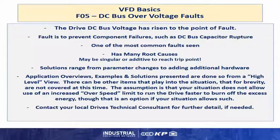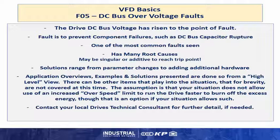The F05 throws when the DC bus has risen to a point to cause a fault. The fault is to prevent component failures such as DC bus capacitors and other items on the power section. It is one of the most common faults seen on AC drives and it has many root causes. They may be singular or additive to reach a trip point. Solutions for the F05 fault range from parameter changes to adding additional hardware. Application overviews, examples and solutions presented are done so from a high level view, and there can be other items that play into the situation that for brevity are not covered at this time.